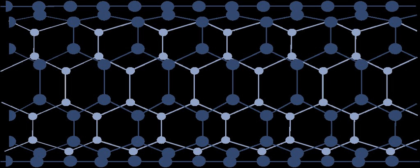An antiferroelectric material consists of an ordered array of electric dipoles from the ions and electrons in the material, but with adjacent dipoles oriented in opposite directions. The dipoles of each orientation form interpenetrating sublattices, loosely analogous to a checkerboard pattern.